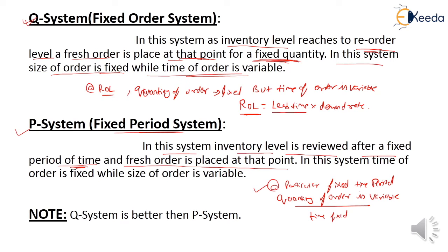What is the main difference between the Q review system and the P review system? In a Q review system, the fresh order is placed at a reorder level and the quantity of order is fixed, but the time is variable. In the P system, the inventory level is reviewed after a particular fixed time period, but the quantity of order is variable and the time is fixed.